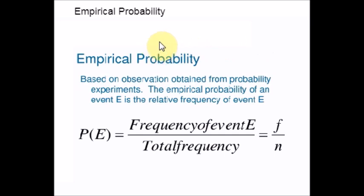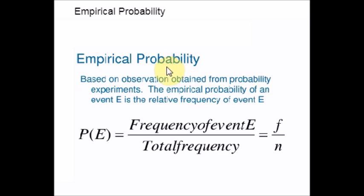Empirical Probability describes the relative frequency of actual observations of an event in an experiment. Empirical Probability is also known as Experimental Probability — that is just another name for it. Empirical Probability is mathematically described as the Frequency of Event E divided by the Total Frequency.